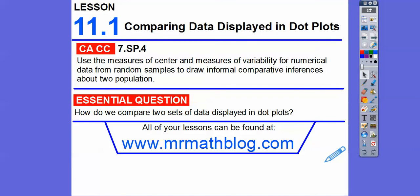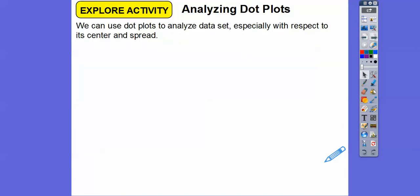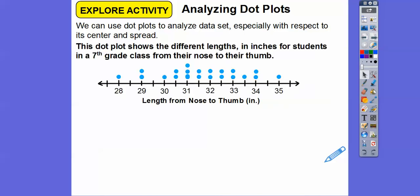So how can we compare two sets of data displayed in dot plots? We can use dot plots to analyze data, especially with respect to its center and its spread. The center means the median number.